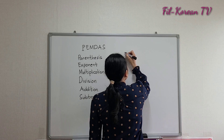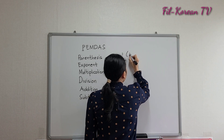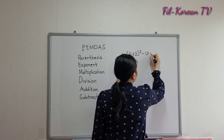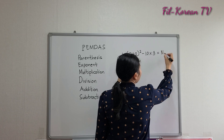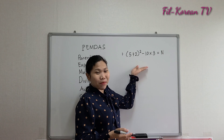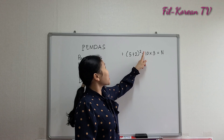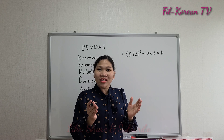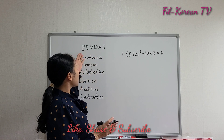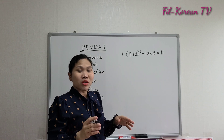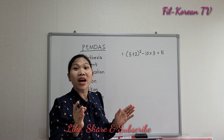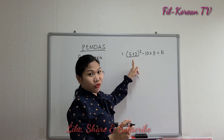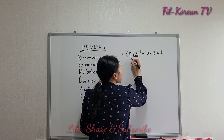First example: 5 plus 2 to the second power minus 10 times 3 equals N. To get the correct answer, we must follow the PEMDAS rule. So, we will perform the first operation in the parenthesis. 5 plus 2 equals 7.